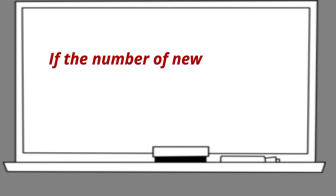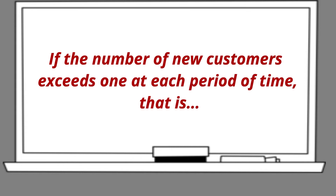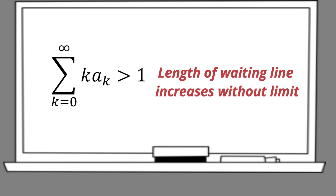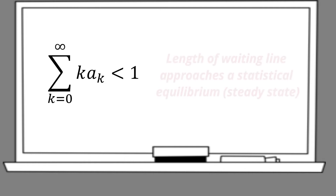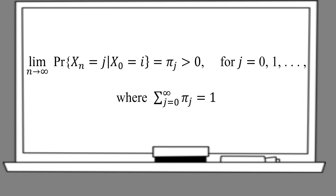With intuition, if the number of new customers exceeds 1 at each period of time — that is, the expected number of customers is more than 1 — then as time passes, the length of the waiting line increases without limit. On the other hand, if the number of new customers is less than 1 at each time period, then the length of the waiting line approaches a statistical equilibrium, or a steady state, described by this limiting distribution.